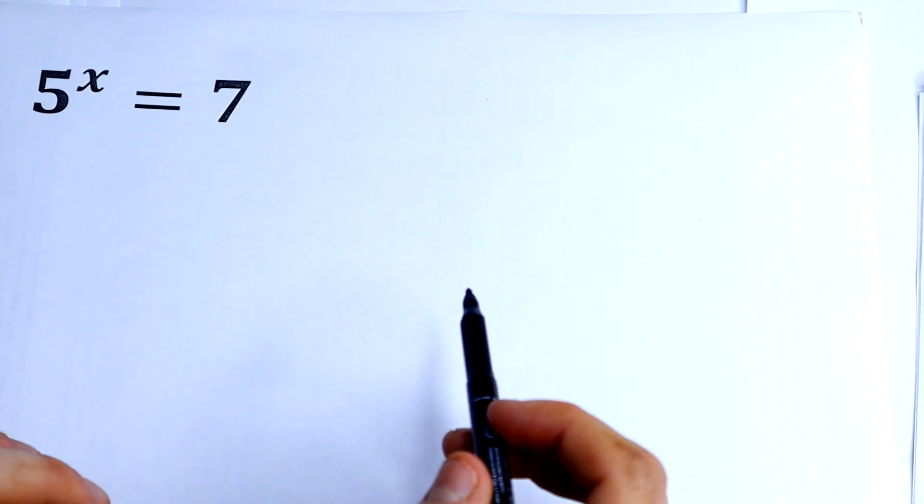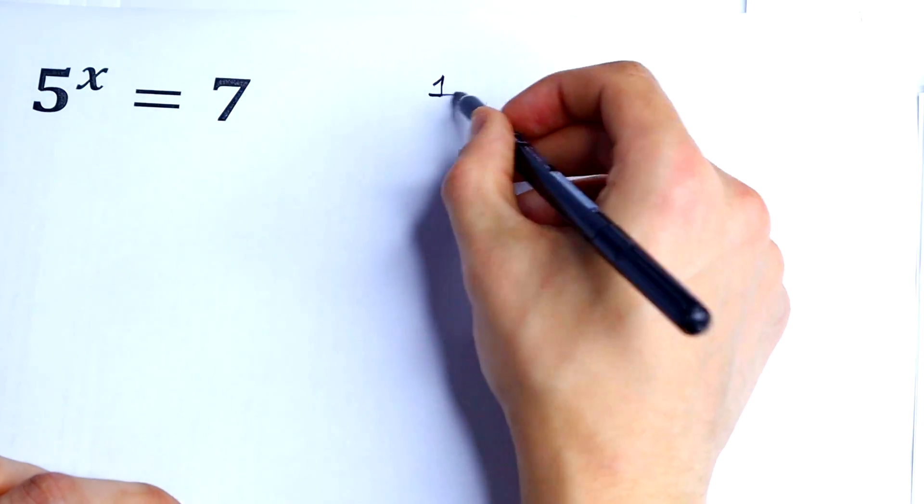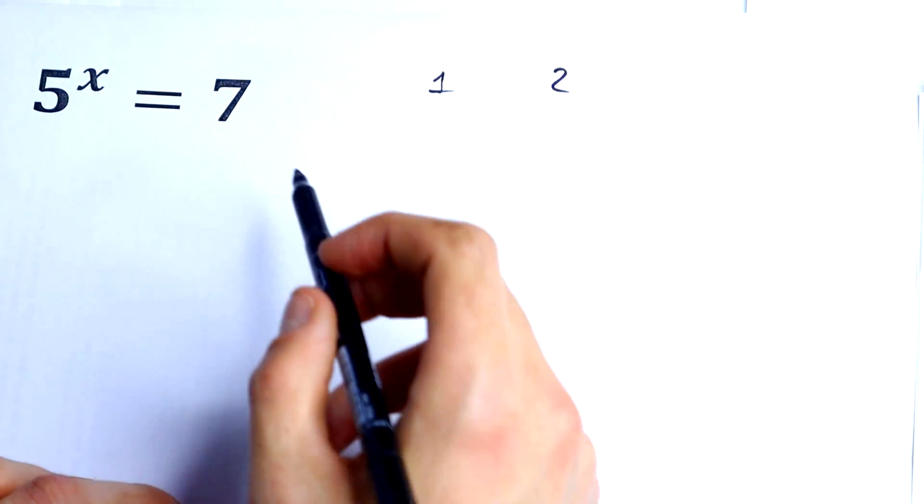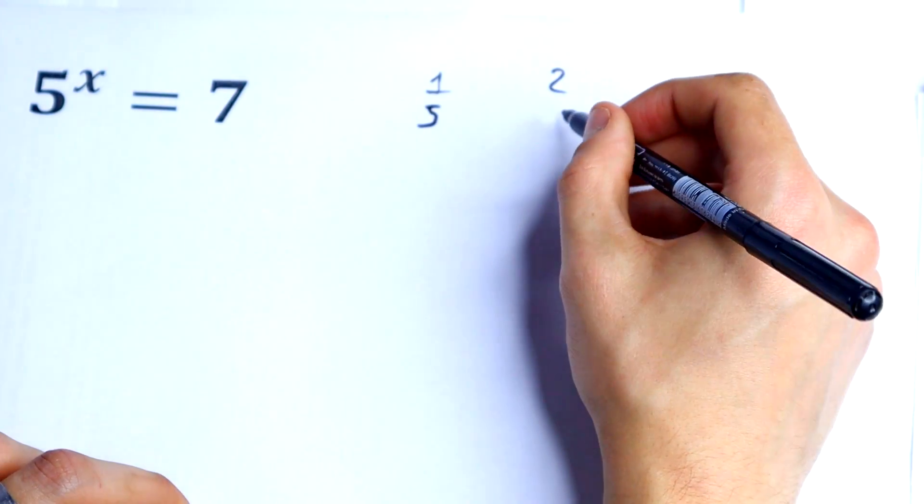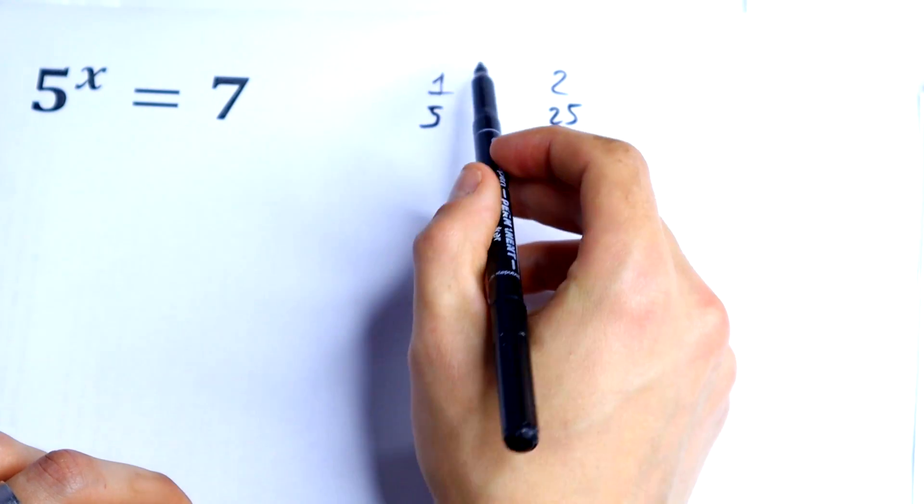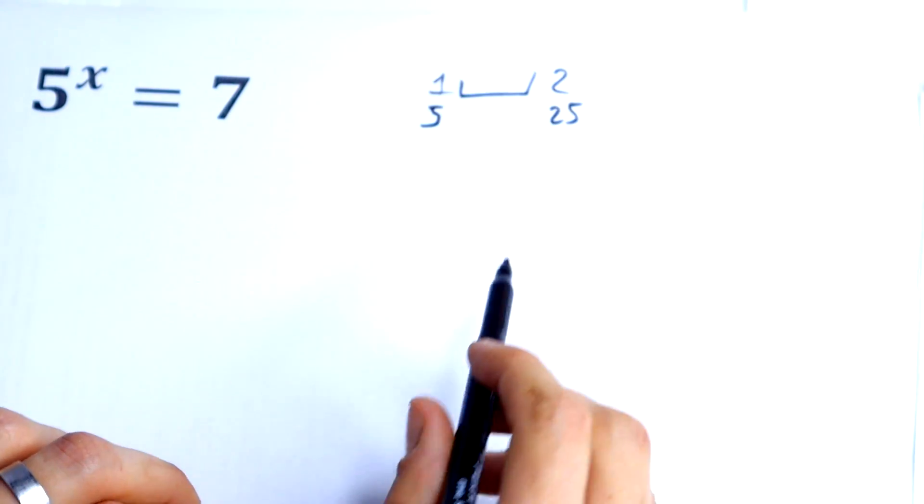First, x is between 1 and 2 because 5 to the power 1 equals 5 and 5 to the power 2 equals 25. So something between 1 and 2.